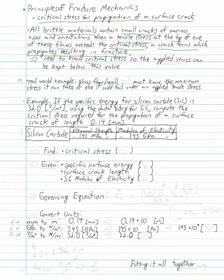We need to know this critical stress so the applied stress can be kept below this value. A quick real-world example would be a glass floor or a wall. You must know the maximum stress or the critical stress it can take or else it could fail under an applied tensile stress.